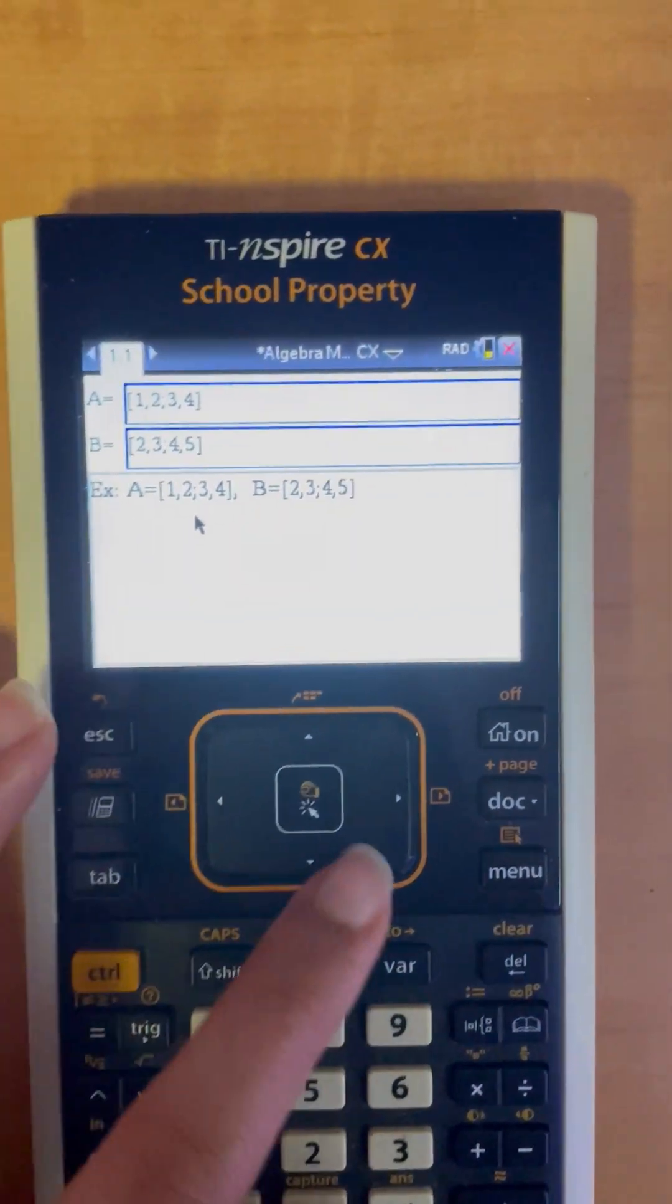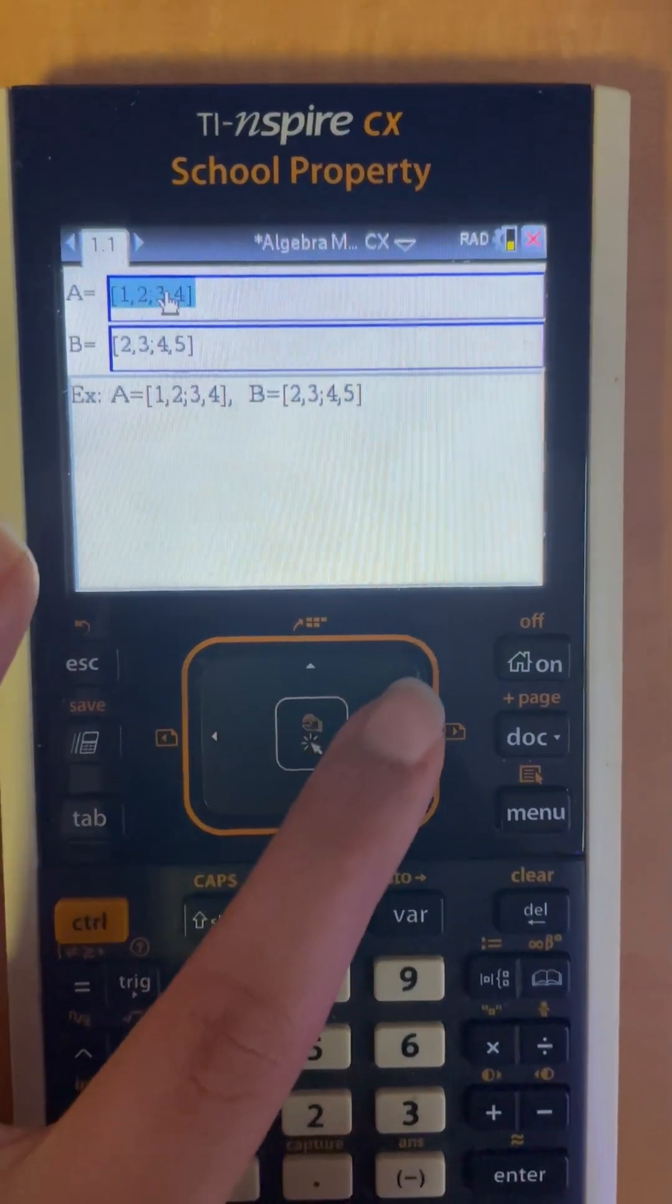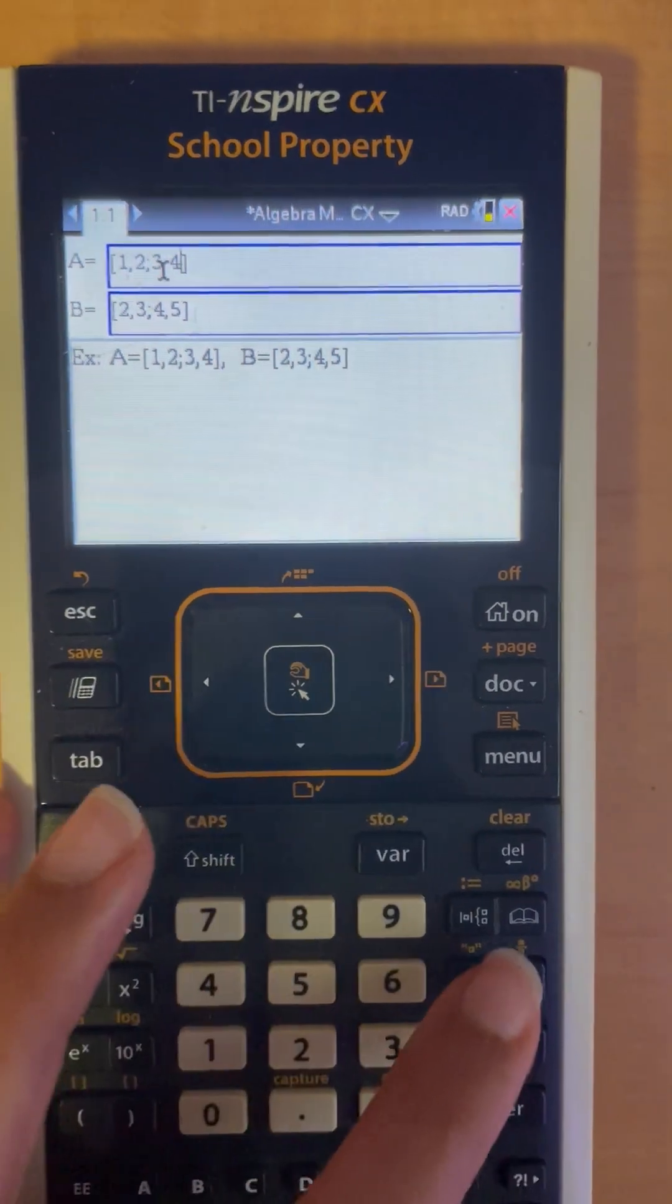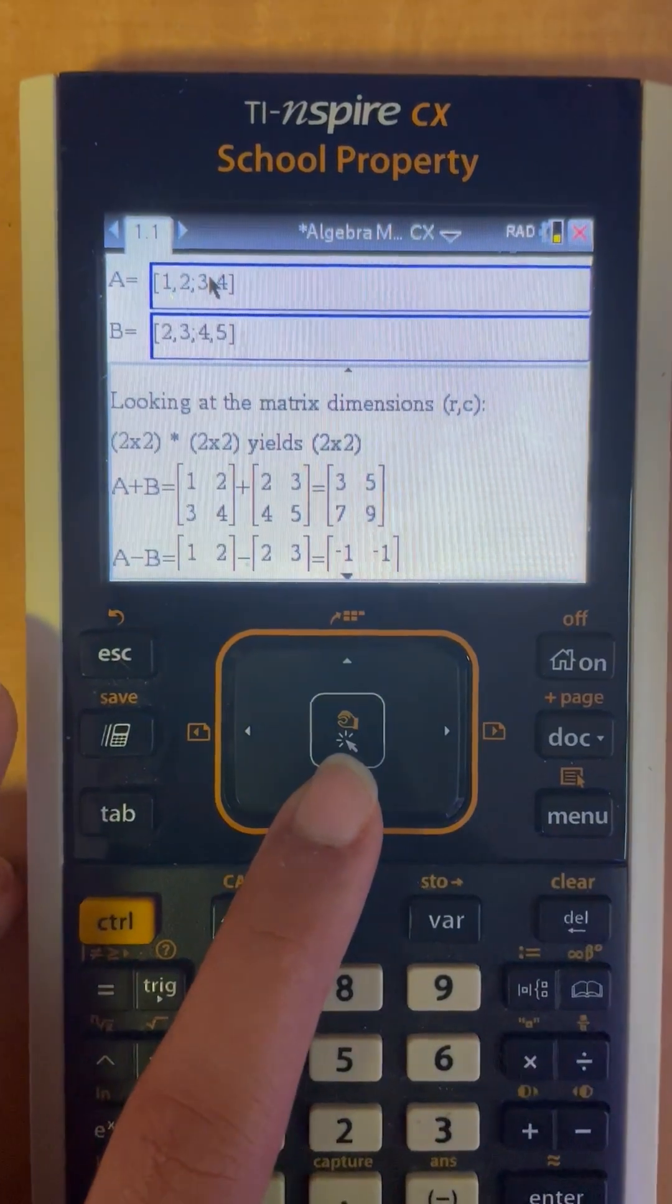So here we have A and B, and all of our numbers. I'll just go up with my cursor and show you guys here. Okay, so let's actually just put four back in, and now we're going to go down some.